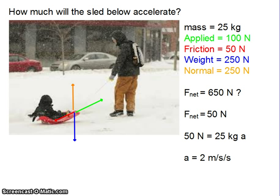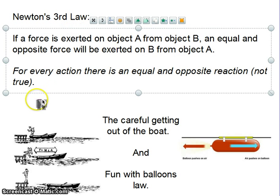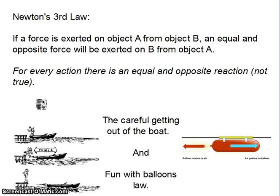Newton's third law, I'm going to call the careful getting out of the boat law or the fun with balloons law. What this says is, if a force is exerted on object A from object B, an equal and opposite force will be exerted on B from A. Sometimes this one gets said as for every action there's an equal and opposite reaction, which isn't necessarily true.